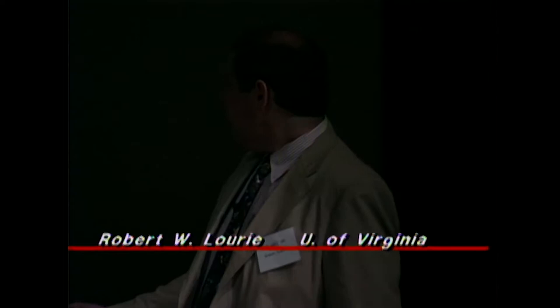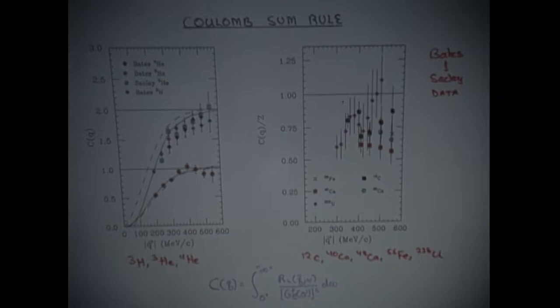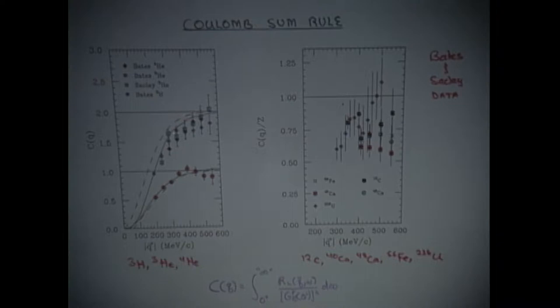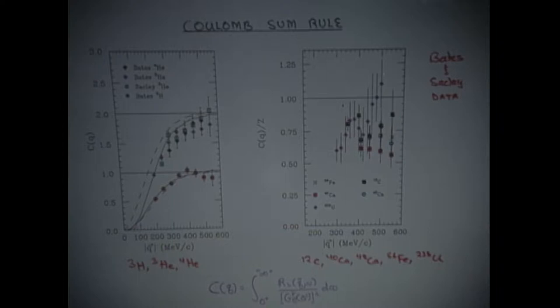Return again to the Coulomb sum rule, which measures essentially the charge of the nucleus and a two-proton correlation term, which one expects to get small as the momentum transfer increases. Both at Bates and Saclay, very detailed studies were done on the few body systems. In tritium, it goes to the value Z equals one quite nicely. On helium three and four, it's either converged or nearly converged to the value Z equals two. When one goes to heavy systems, essentially all heavy systems indicate this quite sizable suppression of the longitudinal response.